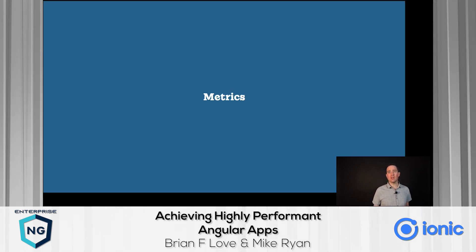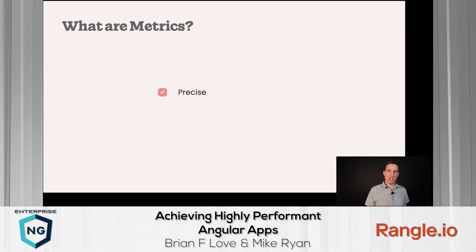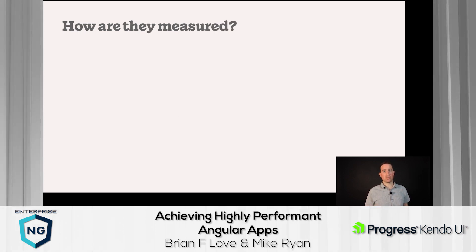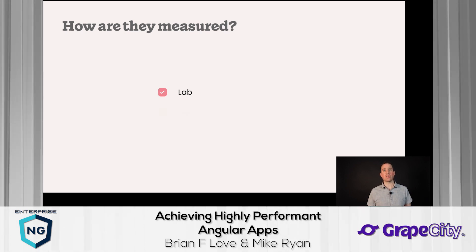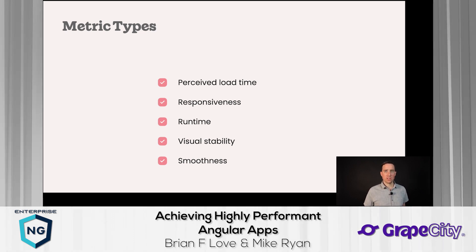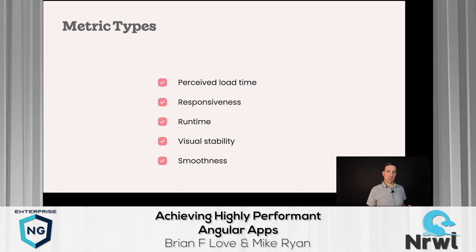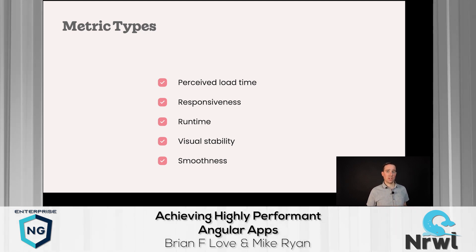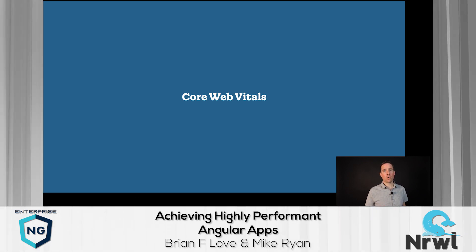How do we measure the performance of our web apps? We're going to use metrics — precise and quantitatively measurable values. We're going to measure these metrics both in the lab on our machines as well as in the field on our users' actual devices. Metrics fall into broad categories: perceived load time, responsiveness, runtime performance, visual stability, and smoothness. I'm going to focus on three metrics that are part of Core Web Vitals.